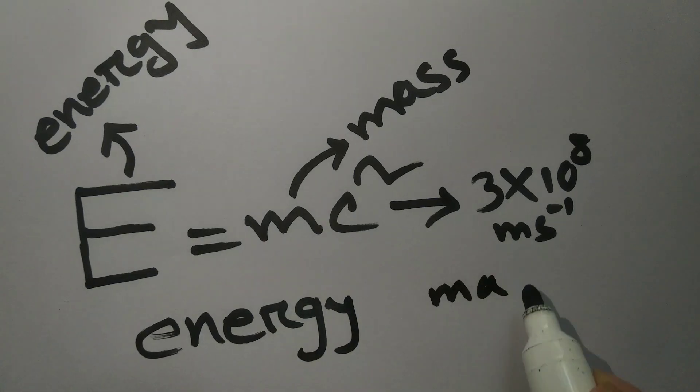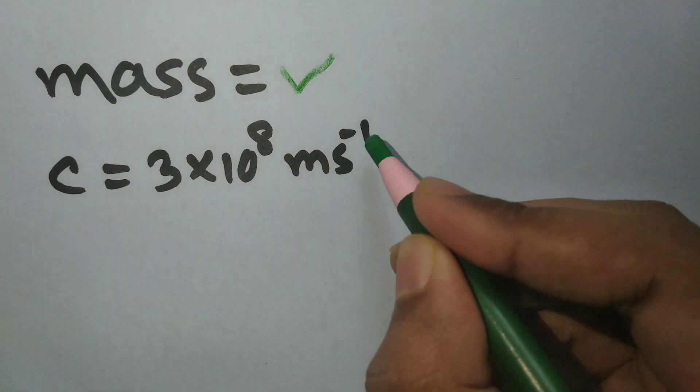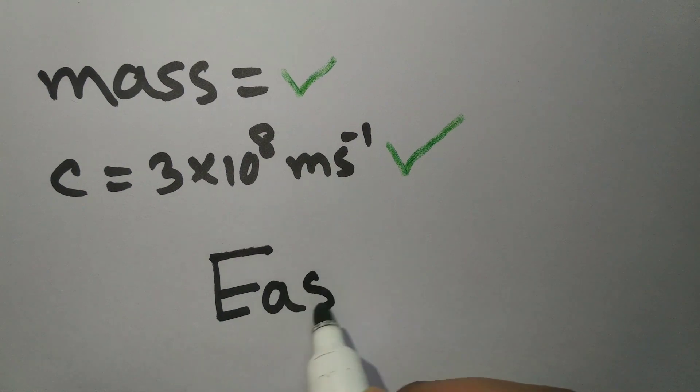I mean seriously, you have the mass, you know the velocity of light, and that's it. You can change mass into energy. It's easy, right?